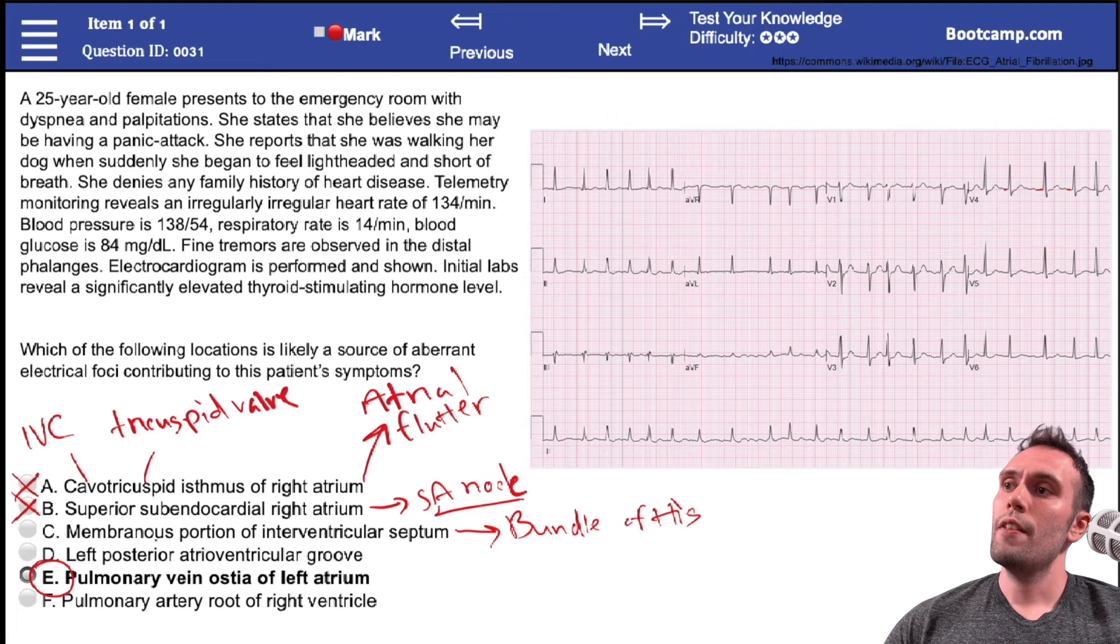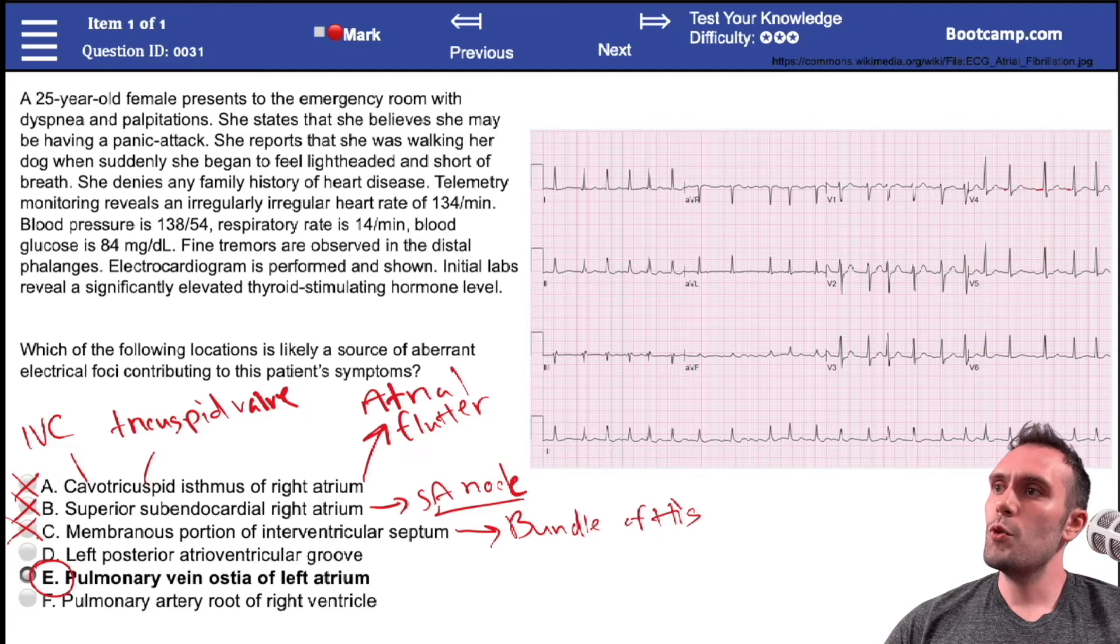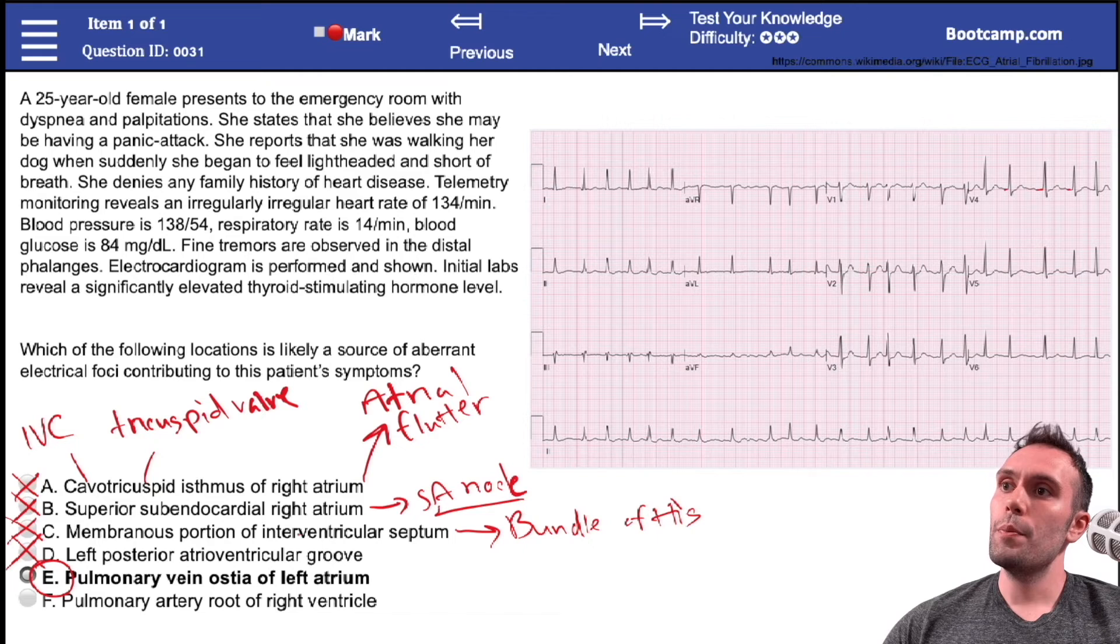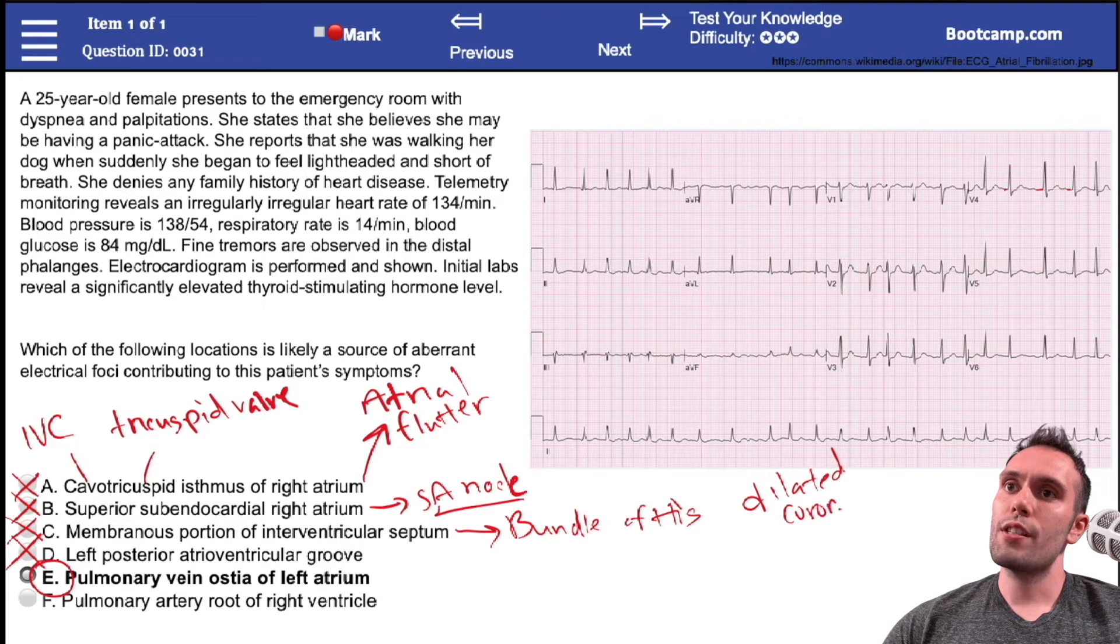Left posterior atrioventricular groove - remember this is the groove that the coronary sinus is going to be running through. Classically this will be dilated. We'll have a dilated coronary sinus in any condition that increases the right atrial pressure.